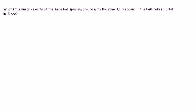Okay, so now we have a different thing. We're saying something makes one orbit in 0.3 seconds. So what I'm really telling you is that the period, the time it takes to make one complete revolution, is 0.3 seconds. So I'm giving you a period.